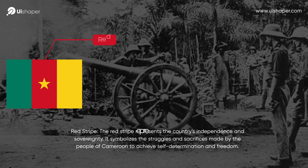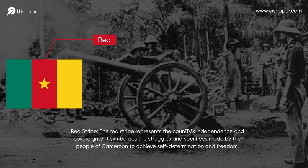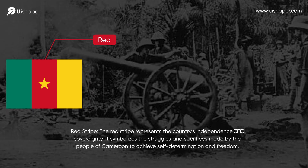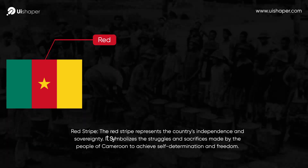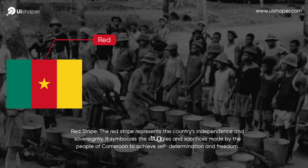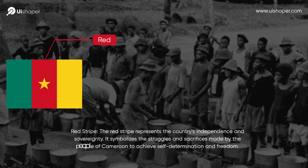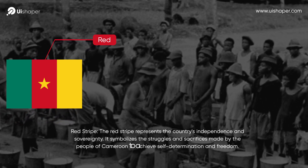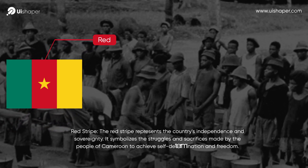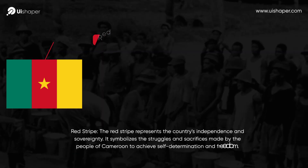The red stripe represents the country's independence and sovereignty. It symbolizes the struggles and sacrifices made by the people of Cameroon to achieve self-determination and freedom.